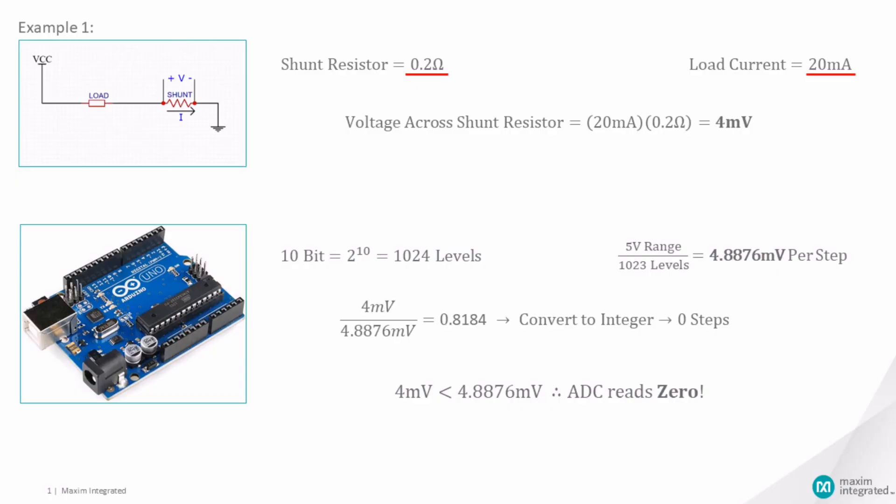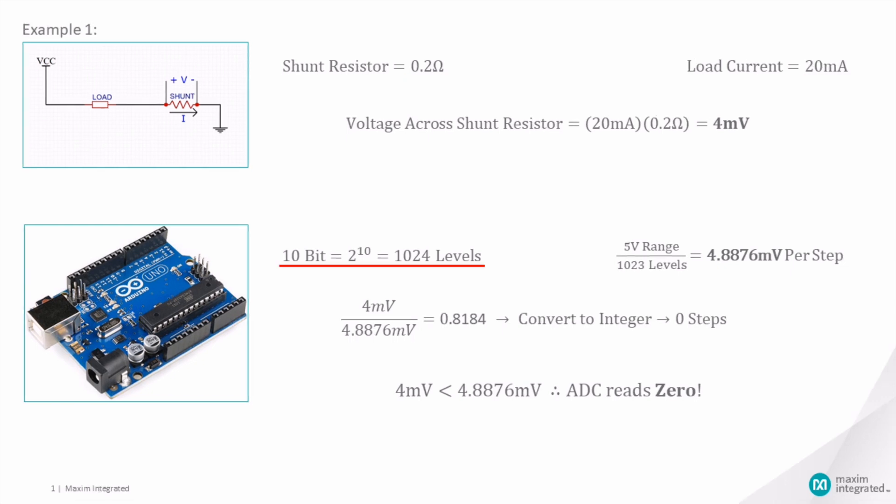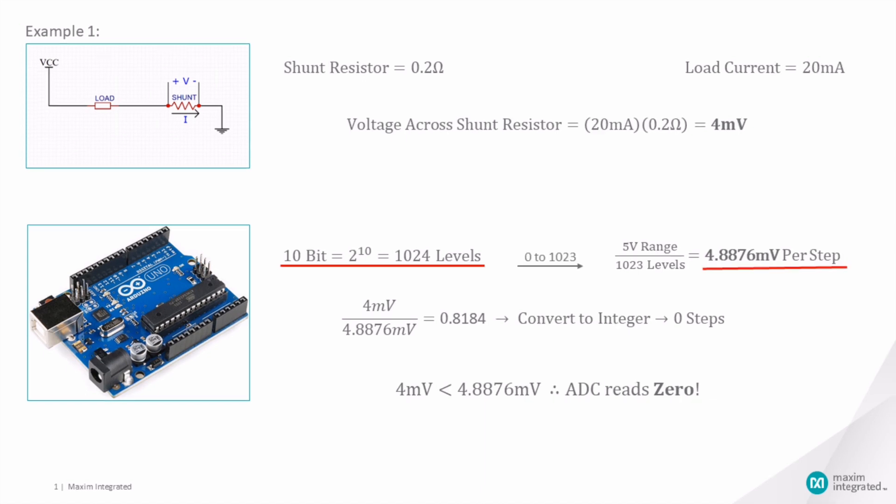For example, if a 200 milliohm shunt resistor is used to measure a load current of 20 milliamps, the voltage dropped across the resistor will be 4 millivolts. The 10-bit ADC of the Arduino has a range of 5 volts over 1024 levels, one of which is zero. This means that each discrete step is roughly 4.88 millivolts.